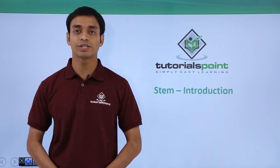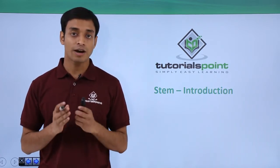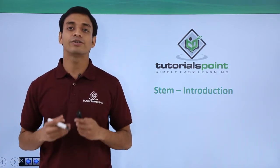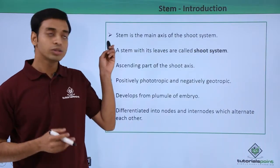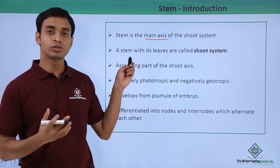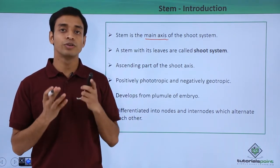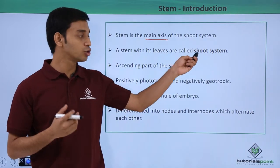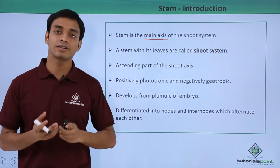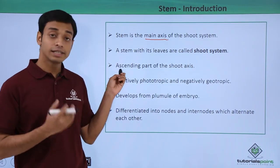Welcome to Tutorials Point. In this video we are going to talk about the second important system of plants after the root system, known as the shoot system. The shoot system includes the stem along with leaves and other structures like flowers and fruits. So the shoot system includes everything above the soil: the stem, flowers, leaves, fruits, etc.